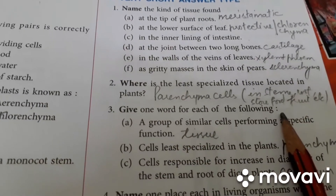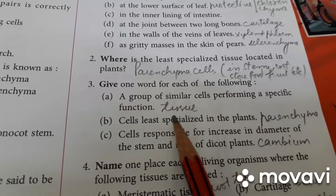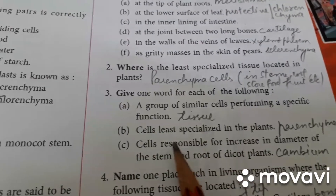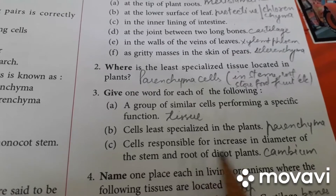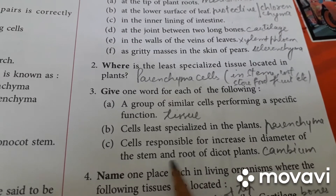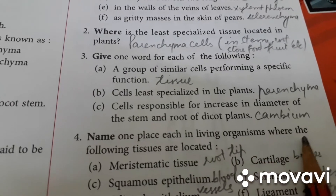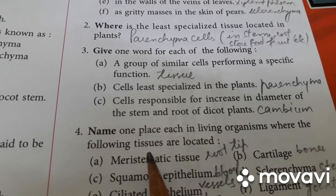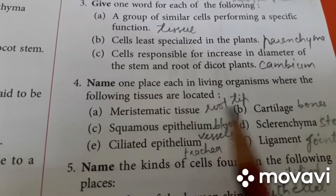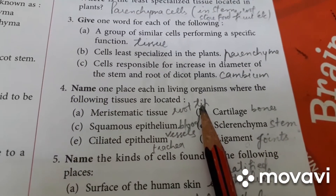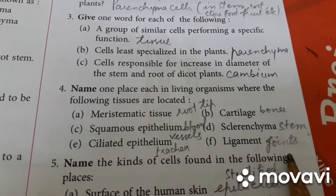Give one word for each of the following. Group of similar cells performing a specific function — tissue. Cells least specialized in plants — parenchyma. Cells responsible for increase in diameter — that is cambium. Name one place in each living organism where meristematic tissue is located — root tip or the tip of the stem. Any example you can note down.